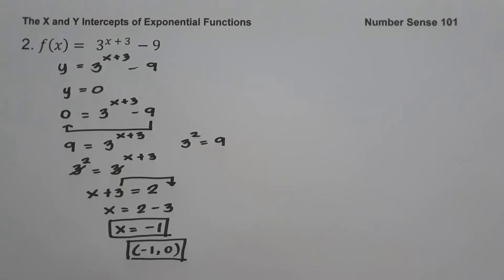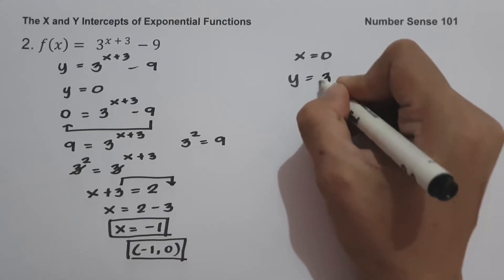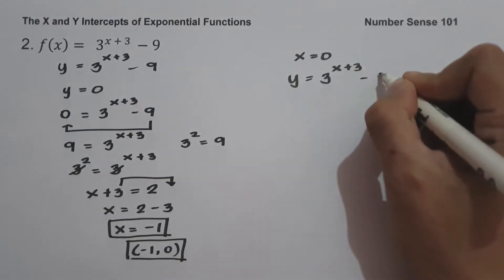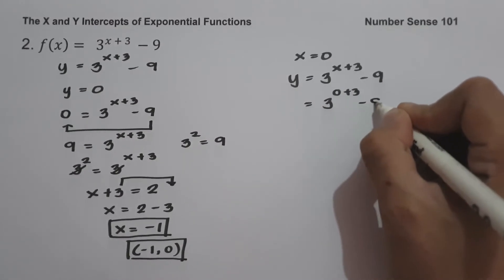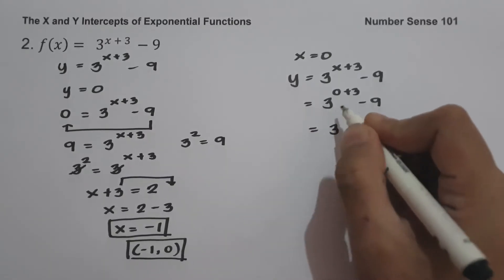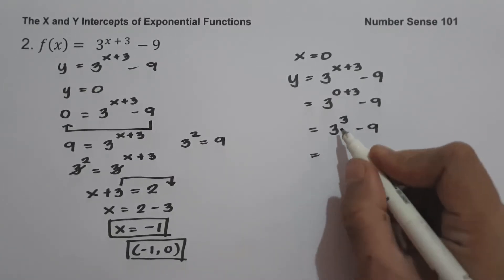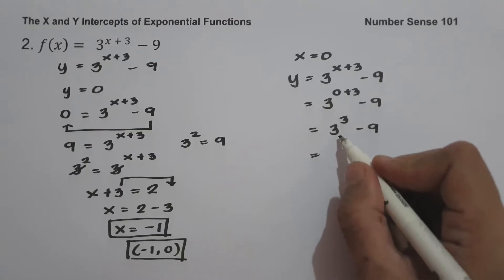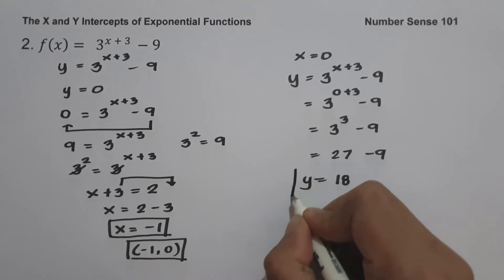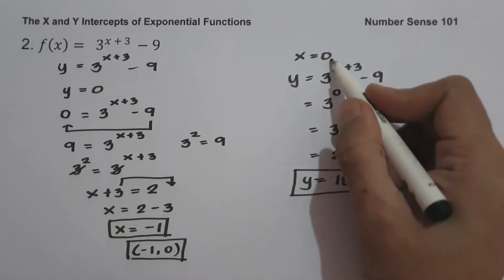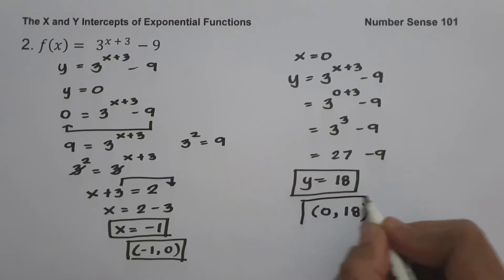To find the y-intercept, let us set x equal to 0. We have y equals 3 raised to x plus 3 minus 9, so y equals 3 raised to 0 plus 3 minus 9. That gives 3 raised to 3 minus 9. Since 3 raised to 3 means multiplying 3 three times to itself, we get 27 minus 9, which is 18. Since x is 0 and y is 18, our y-intercept is (0, 18).